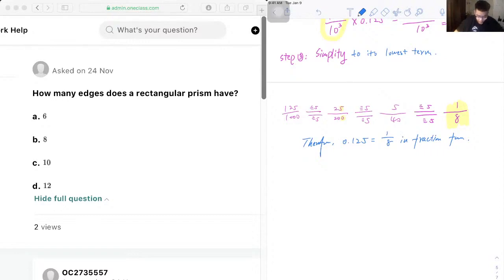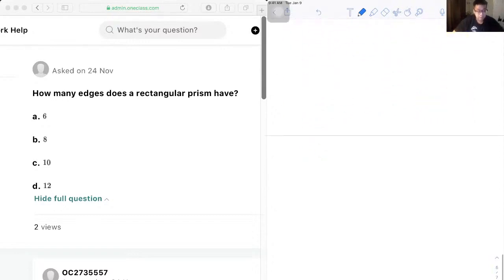Okay, so our next question is asking us how many inches does a rectangular prism have? So let's copy down the question. How many inches does a rectangular prism have? Number given for answer: 6, 8, 10, 12.